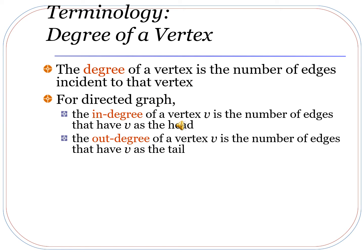What is the degree of a vertex? The degree of a vertex is the number of edges incident to that vertex. For a directed graph, the in-degree of a vertex V is the number of edges that have V as the head node, and the out-degree of a vertex V is the number of edges that have V as a tail node.